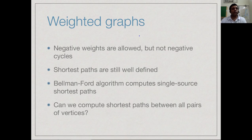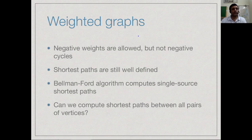The Bellman-Ford algorithm allows us to generalize Dijkstra's algorithm and compute single-source shortest paths in weighted graphs with negative weights but without negative cycles. Now we want to further generalize this and compute not just the shortest path from a single source but the shortest path between every pair of vertices. An example would be running a travel or airline website where somebody wants to find the minimum cost flight or train between any pair of cities.